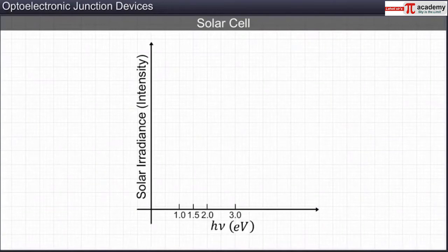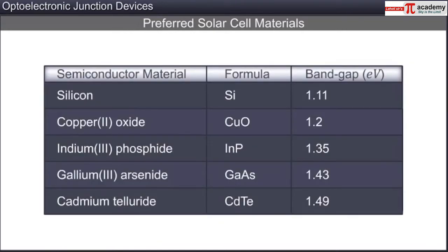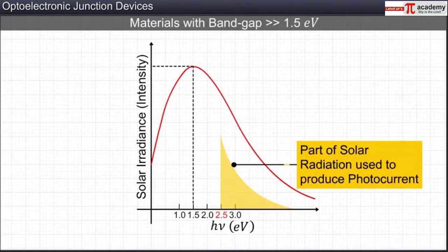If we plot the intensity of solar radiation against its energy, we find that the maximum intensity radiation is produced by photons having energy equivalent to 1.5 electron volts. Thus, semiconductors having band gaps lower than 1.5 electron volts are used in the manufacturing of solar cells. Here are a few examples. In semiconductors having band gaps higher than 1.5 electron volts, only a small portion of the total solar radiation is used to produce photocurrent. Thus, such materials are not preferred in the making of solar cells.